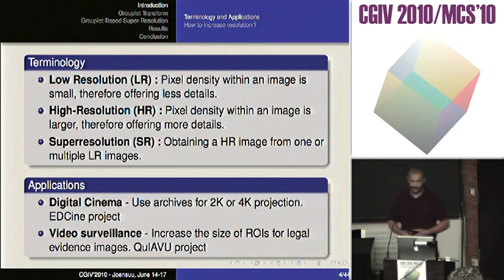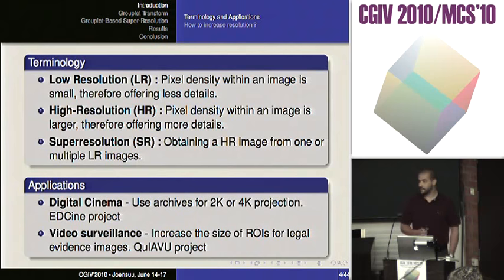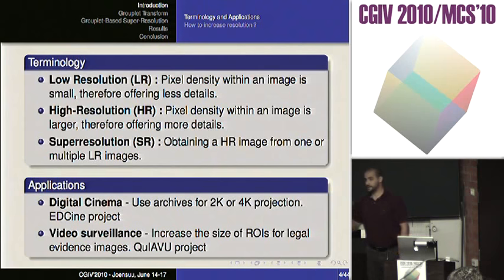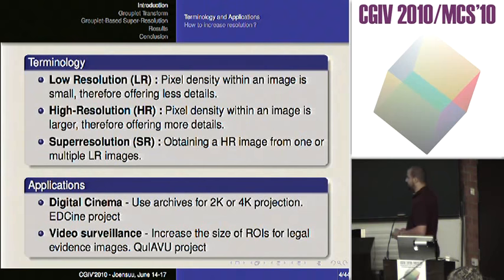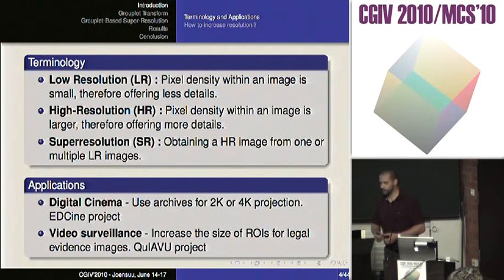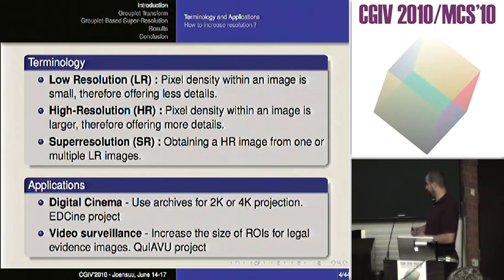The second application is video surveillance. The idea was how to increase the size of a region of interest — it can be a face, it can be some persons. With video surveillance in general, the quality of images is not really good. And for legal evidence images, we sometimes need more resolution in order to recognize faces or to have a very good quality legal evidence image.